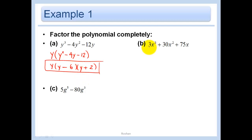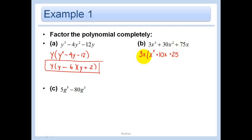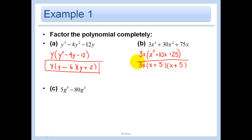Now let's look at this one. I see a 3 in all terms, and also an X in all of them, so let's factor a 3X out. 3X cubed divided by 3X leaves X squared. 30 divided by 3 is 10, X squared divided by X is X. 75 divided by 3 is 25, and X divided by X is 1. Now let's try and factor the parentheses: X and X, 25 is a 5 and a 5 — this is looking good.